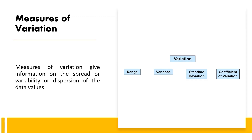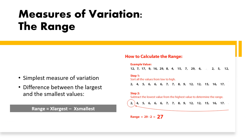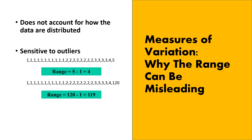Next we have measures of variation. Variation can be measured four ways: range, variance, standard deviation, and coefficient of variation. Range is the simplest measure. To calculate the range, sort all values from low to high and subtract the lowest value from the highest. Range can be misleading because it does not account for how data are distributed, and it is sensitive to outliers.